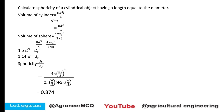An important exam question: calculate the sphericity of a cylindrical object having a length equal to its diameter. The volume of a cylinder is π r² h; here h = l and r² = d²/4, and since length equals diameter, d = l, giving volume = π d³/4. Setting this equal to the volume of a sphere (4/3 π r³, where r³ = ds³/8) and equating gives 1.5 d³ = ds³, so ds = 1.14 d.